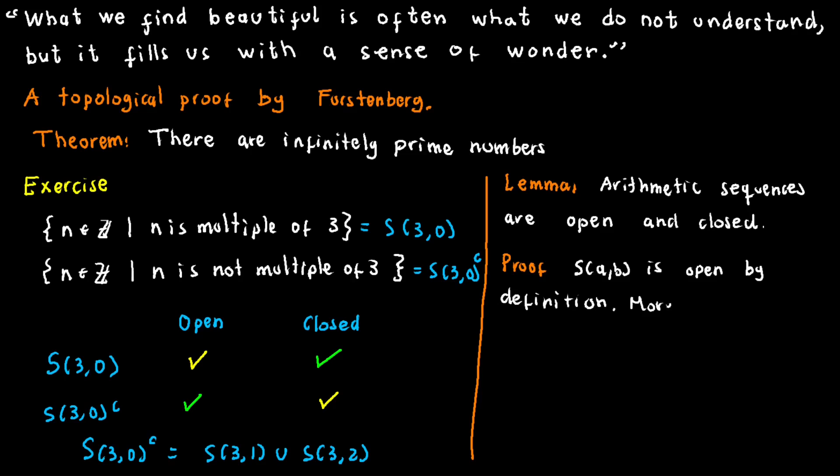The arithmetic progression S(A,B) earns its closed status when it forms the complement of an open set, resulting from the union of S(A,C), where C ranges from 1 to A, excluding B. Share any questions or thoughts on this, and if you can suggest a simpler or better way to express this lemma, we're all ears.